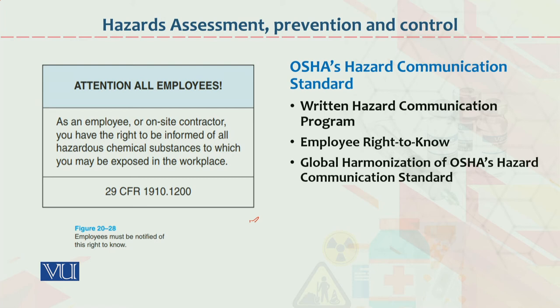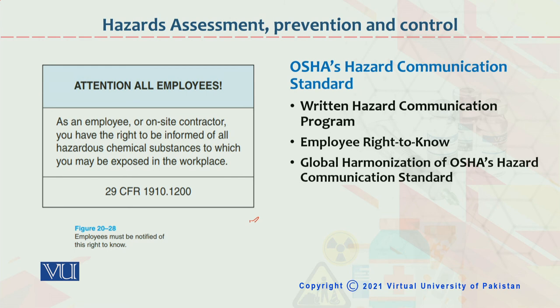Number one: written hazard communication program — how many hazard communication programs should be written, specifically well-shared. Number two: employee right to know — that employees should know the right to access information and which organization does the work. Number three: global harmonization of Occupational Safety and Health Association Hazard Communication Standards all over the world, and what substandards and organizations actively participate and implement these things around the world.